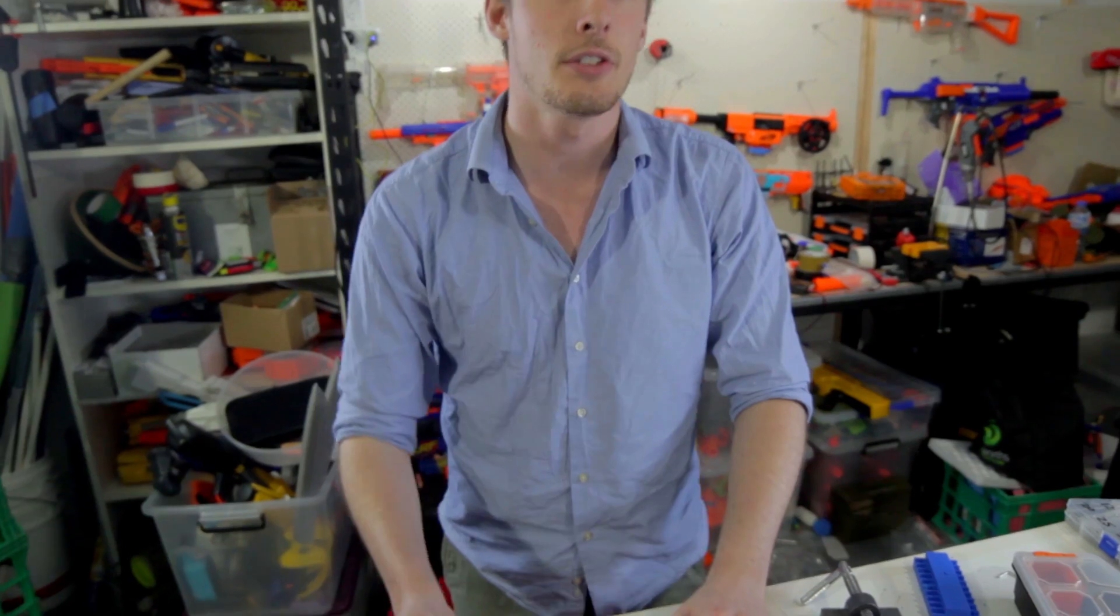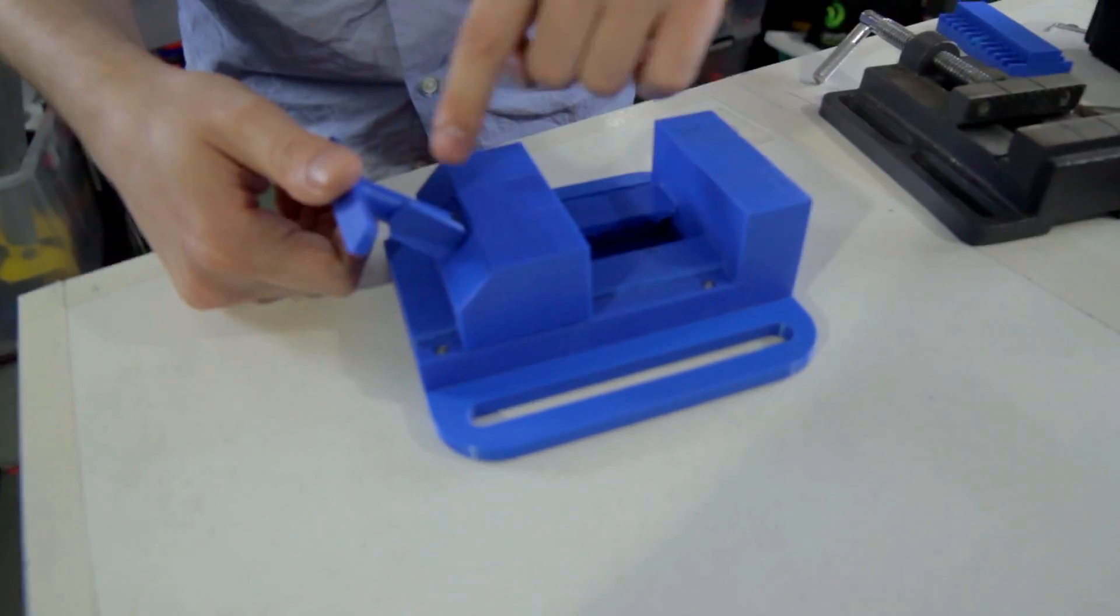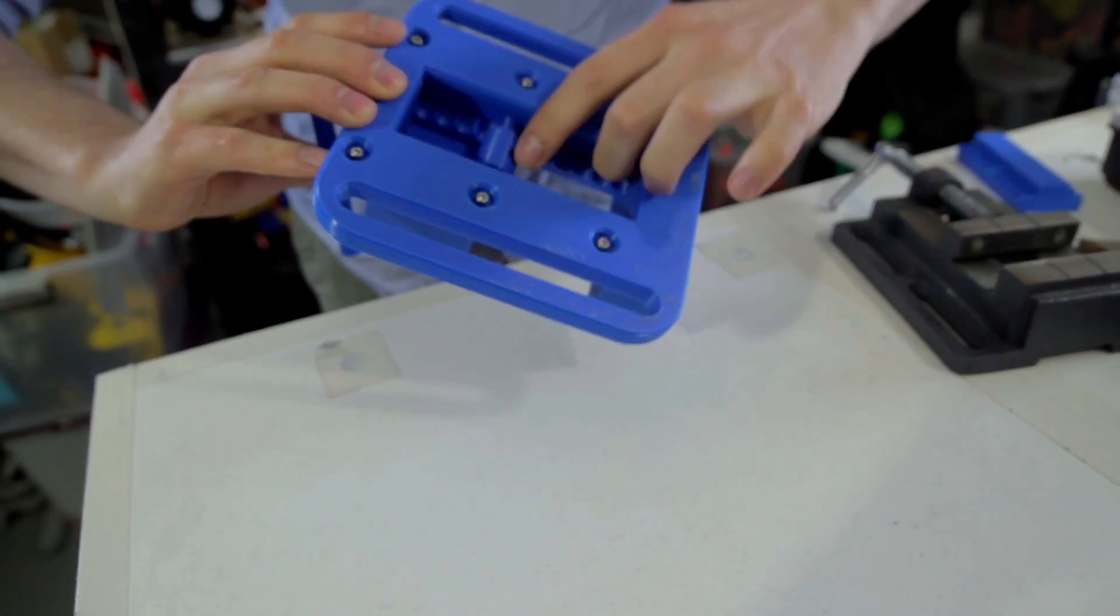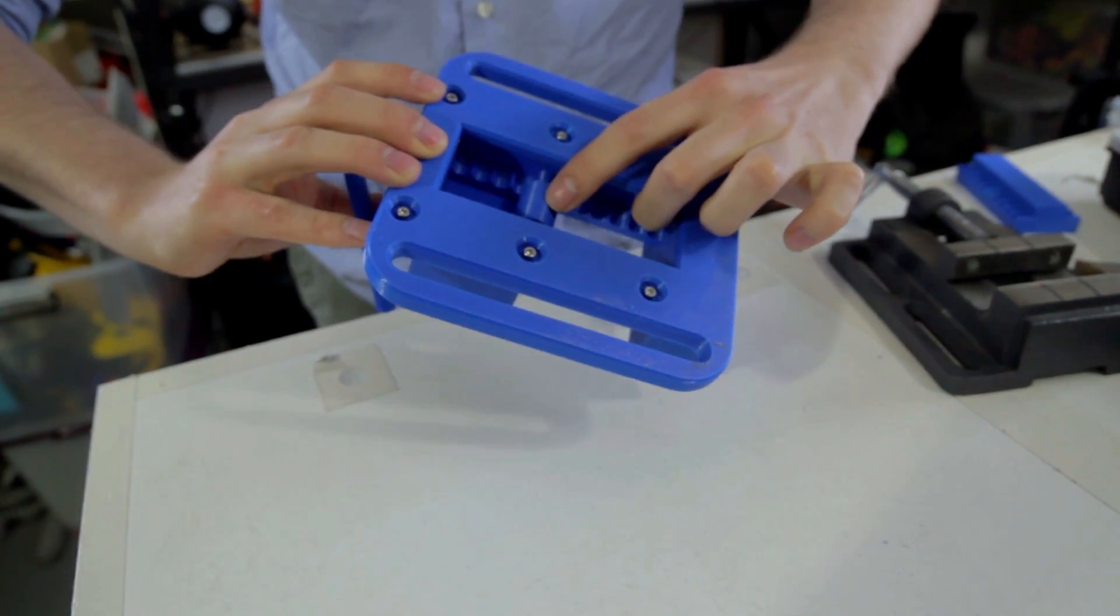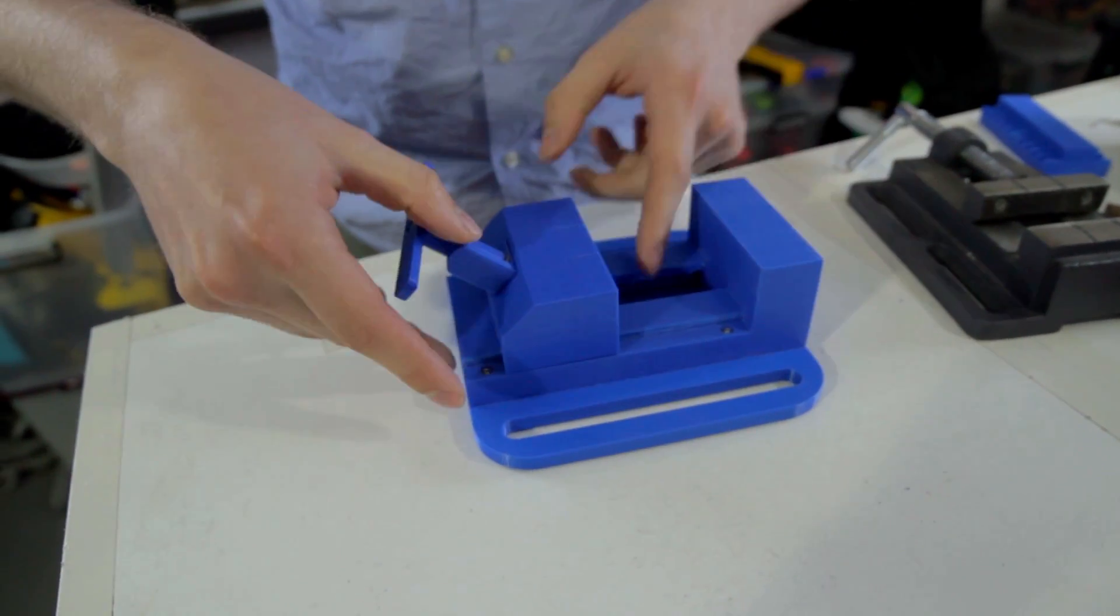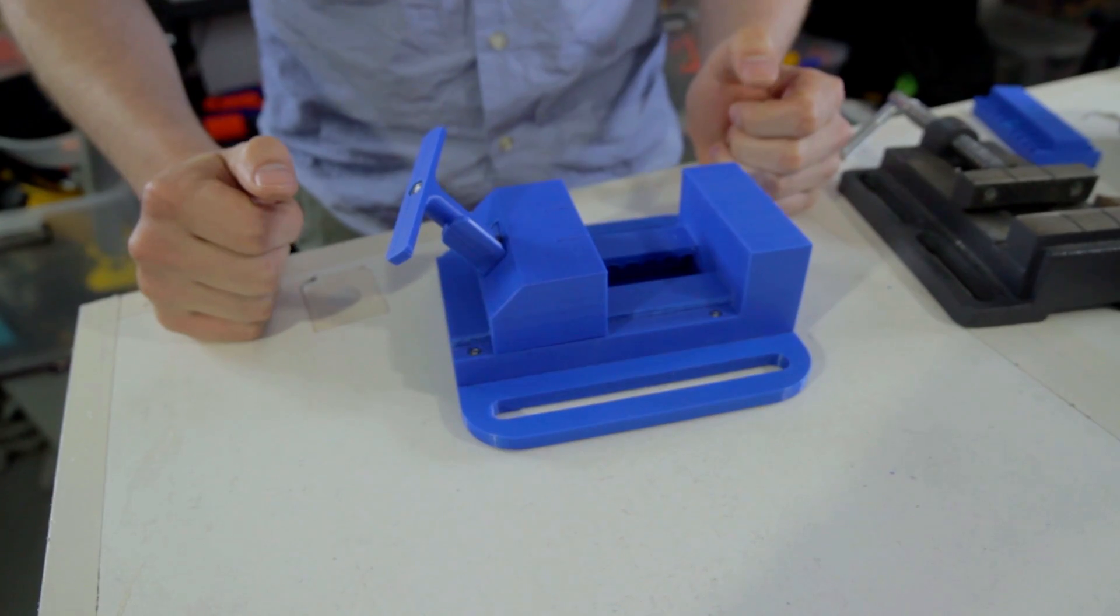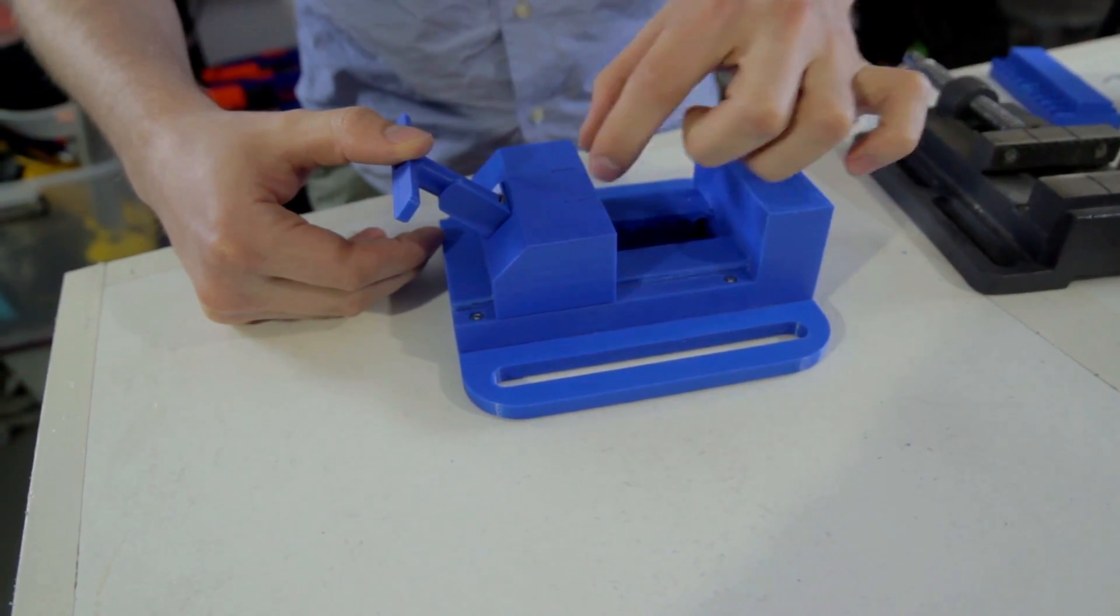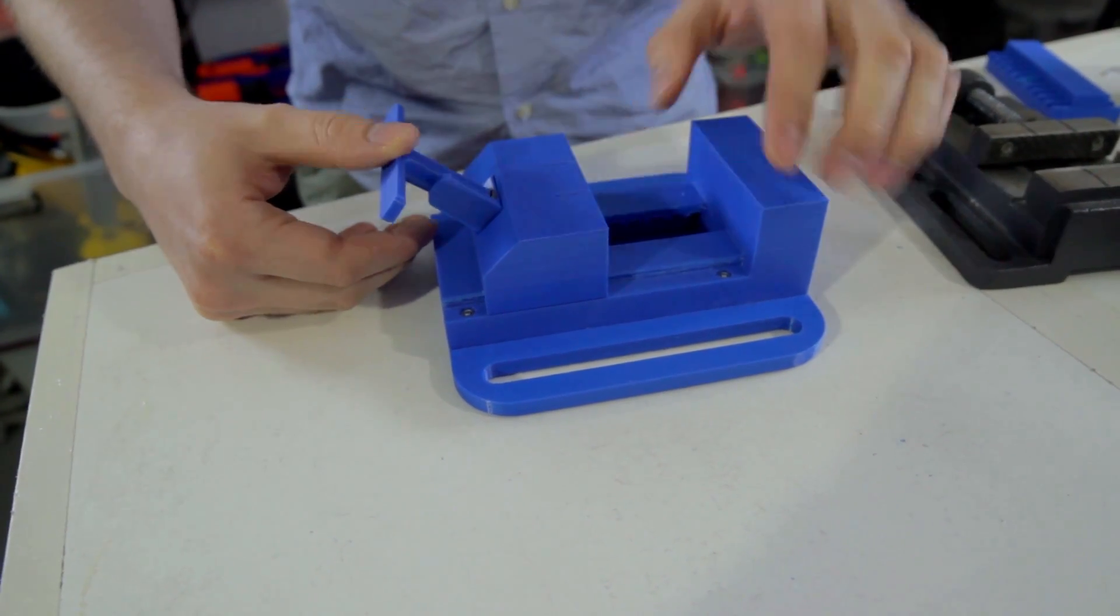Alright, so I printed version 2 and there are a few subtle changes that I've made since the last version. So most obviously these are now all printed in blue. I've reprinted these parts here, this pivot part and the pin, with 100% infill to give them more strength because they were taking quite a lot of load and I noticed them flexing.